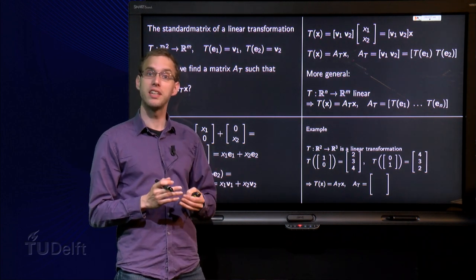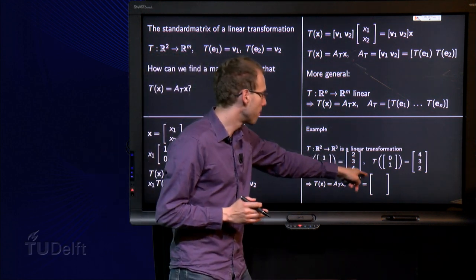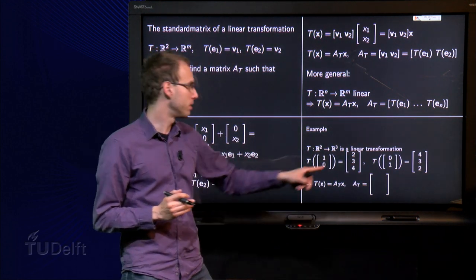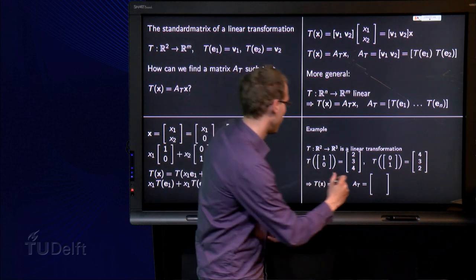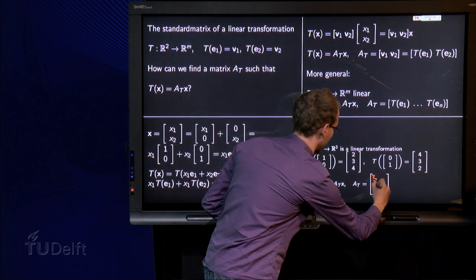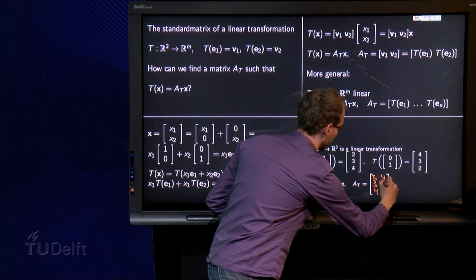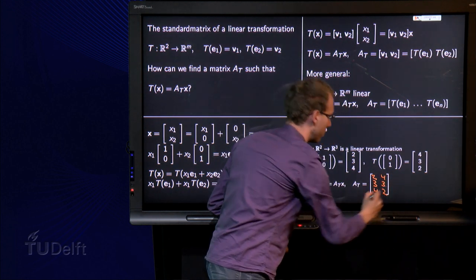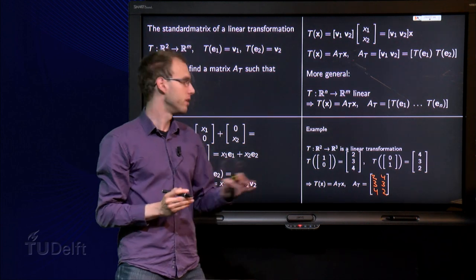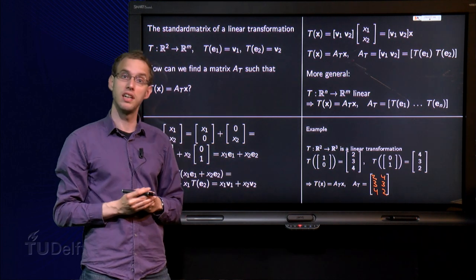We have a 3 by 2 matrix and we have to put here the T of E1 as the first column, T of E2 as the second column. Well the T of E1 equals 2, 3, 4. And the T of E2 equals 4, 3, 2. So there we go. There we have the standard matrix of this linear transformation.